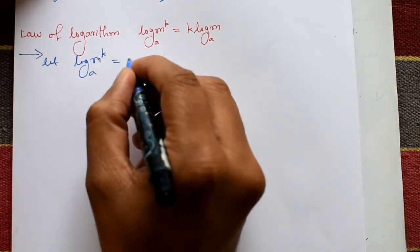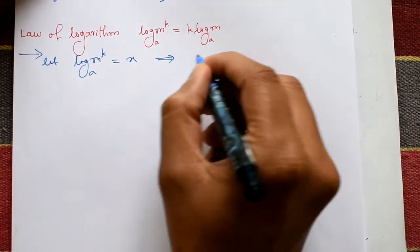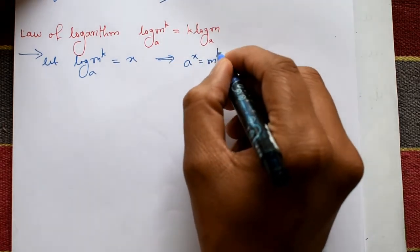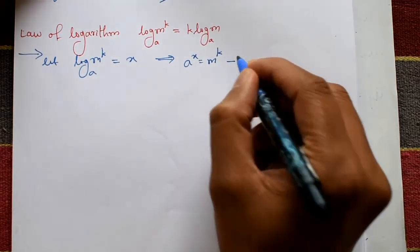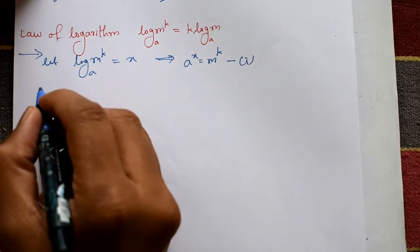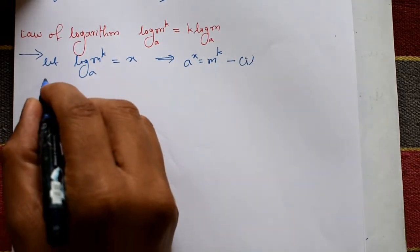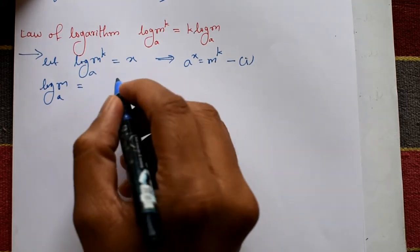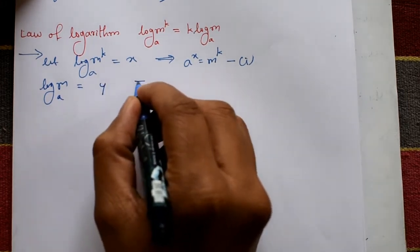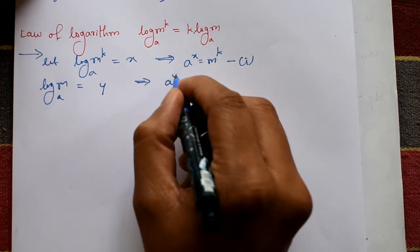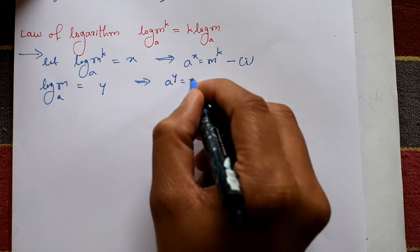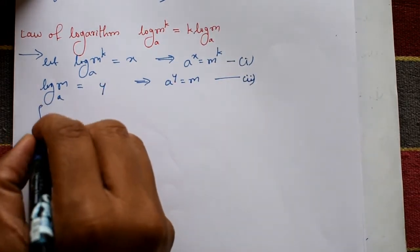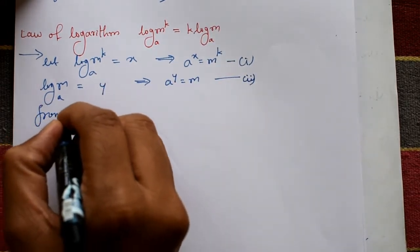Consider x. So a raised to x is equal to m^k — this is equation number one. Now second: log m to the base a, consider that equal to y, and this gives a raised to y equal to m — equation number two.